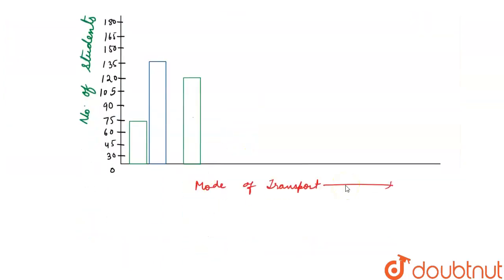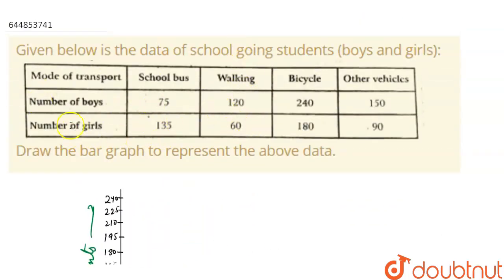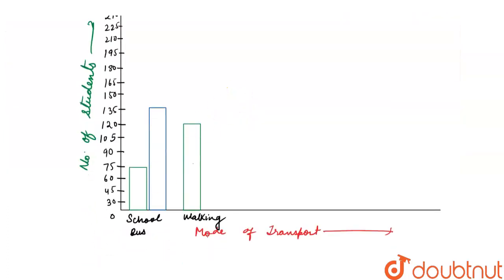Before making more bars, let's name the previous graphs. This graph is representing school bus. Now we are making for walking. Number of girls for walking is 60, so we draw the blue bar at 60.